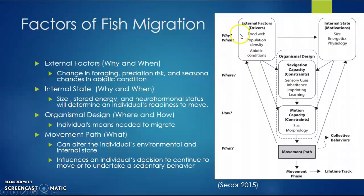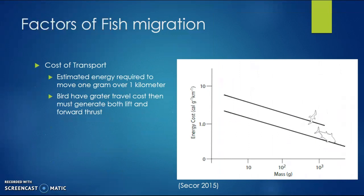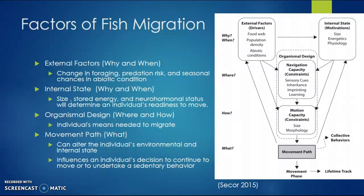So again, these factors address the why, when, where, how, and what of fish migration. It's important to understand migration to protect species, as overfishing is the leading cause of fish decline in the world today. We need to understand these things so we can create protected areas for organisms and monitor fishing in these areas to protect the biodiversity of our marine ecosystems.